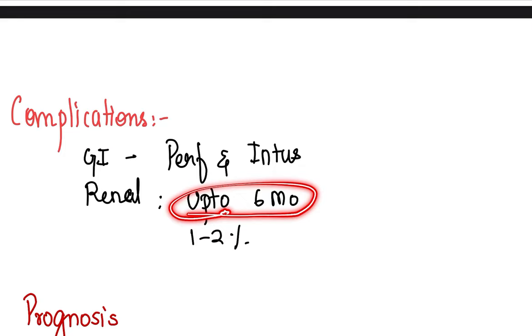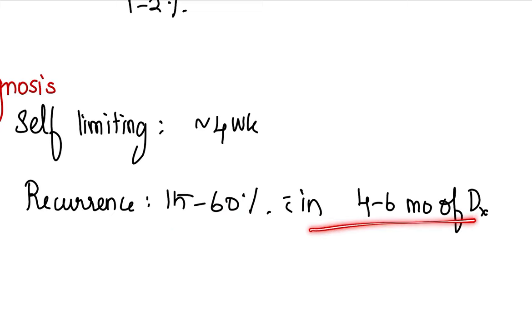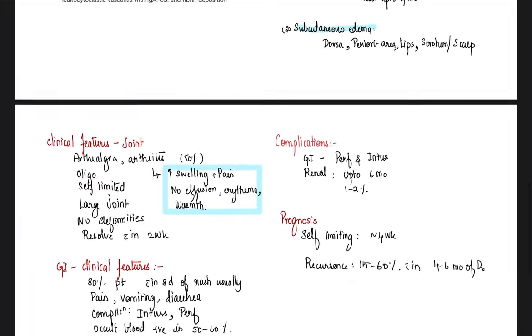What are the complications of HSP? GIT perforation and intussusception we discussed. Renal, up to six months you will have to monitor for nephritic-nephrotic features. Rarely CNS manifestation can be present. Prognosis is good, it's self-limiting. Within four weeks they usually resolve. Recurrence can be there in 15 to 60 percent within four to six months of diagnosis. The recurrence generally is seen if patient has abdominal symptoms at presentation. Gastrointestinal symptoms at diagnosis is one of the best predictors, but that's more in adults rather than in children.